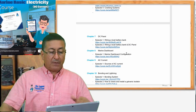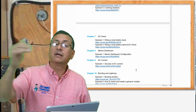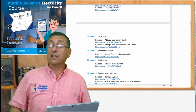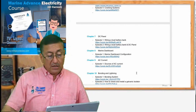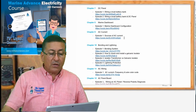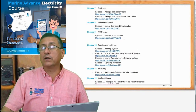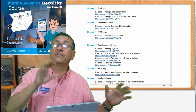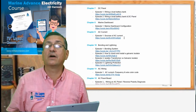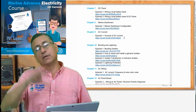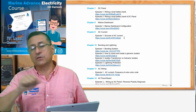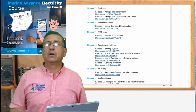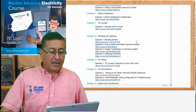In chapter number nine, the advanced electricity course begins. In advanced electricity we are going to start with the AC current. We are going to analyze the different sources of AC current that you have on your boat — one by one: the inverter, the generator, and the shore power. This is chapter nine.